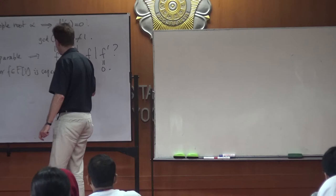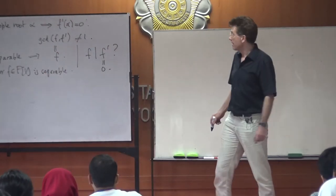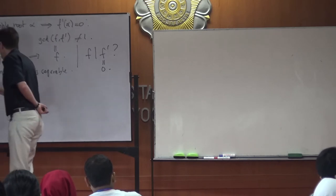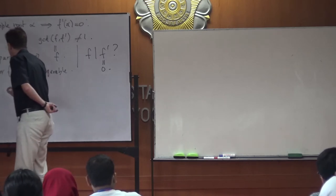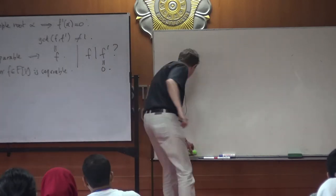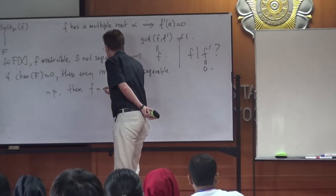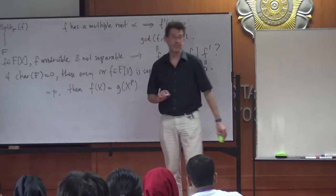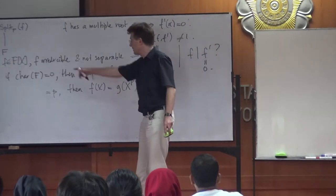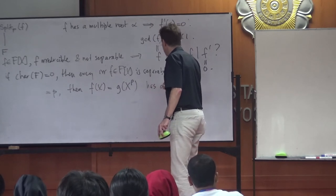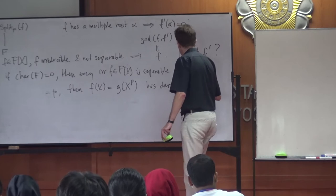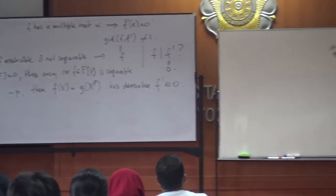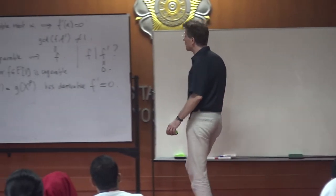In characteristic 0, you never encounter the inseparable world. However, if the characteristic equals p, and you take a polynomial F of x that only involves powers x to the p — so F(x) = G(x^p) for some polynomial G — then the derivative F prime is identically zero. That's because if you differentiate x^p or x^{kp}, it disappears in characteristic p.